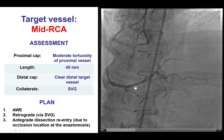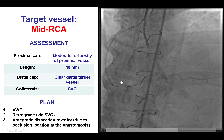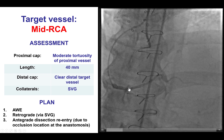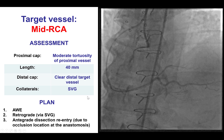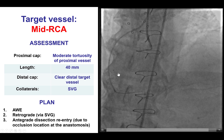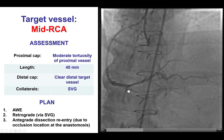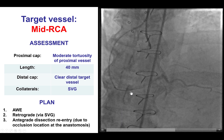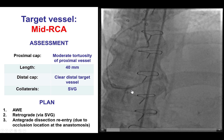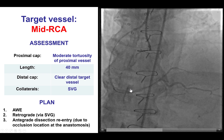The occlusion length was about 40 mm. The distal vessel was of good quality; however, there was no good filling distal to the vein graft anastomosis and no good retrograde stump. Based on this, the plan was to first try antegrade wire escalation, then try to go retrograde through the saphenous vein graft, and lastly perform antegrade dissection re-entry — with the concern being that antegrade dissection close to the vein graft anastomosis might compromise flow through the SVG to the right coronary artery.